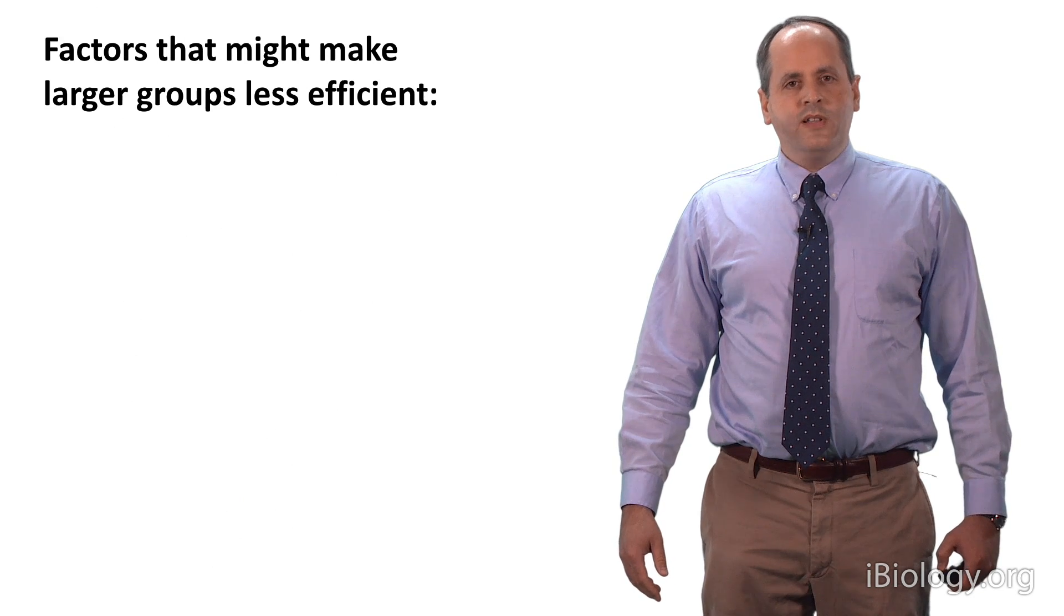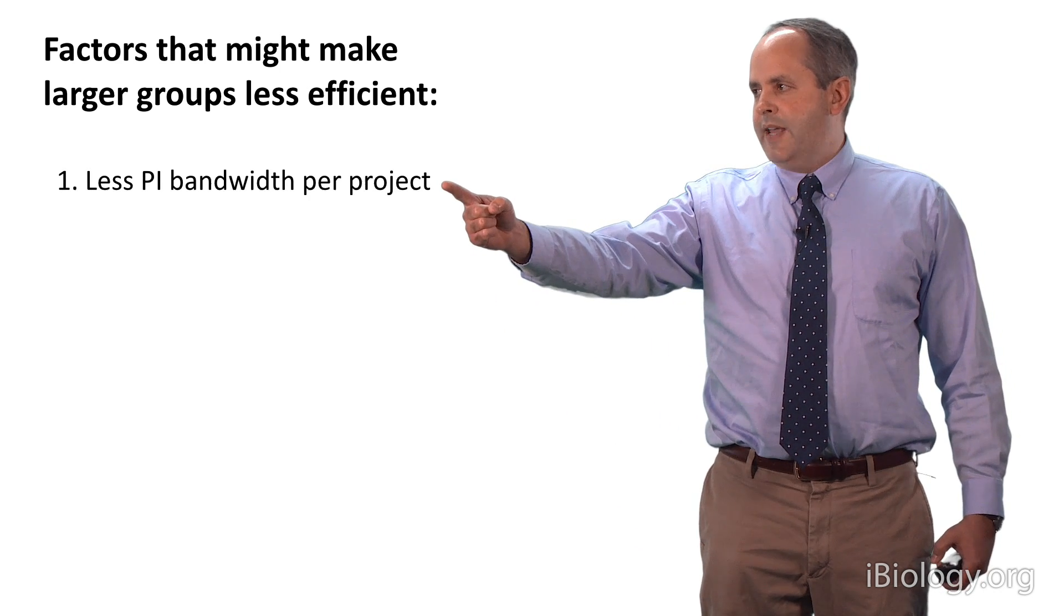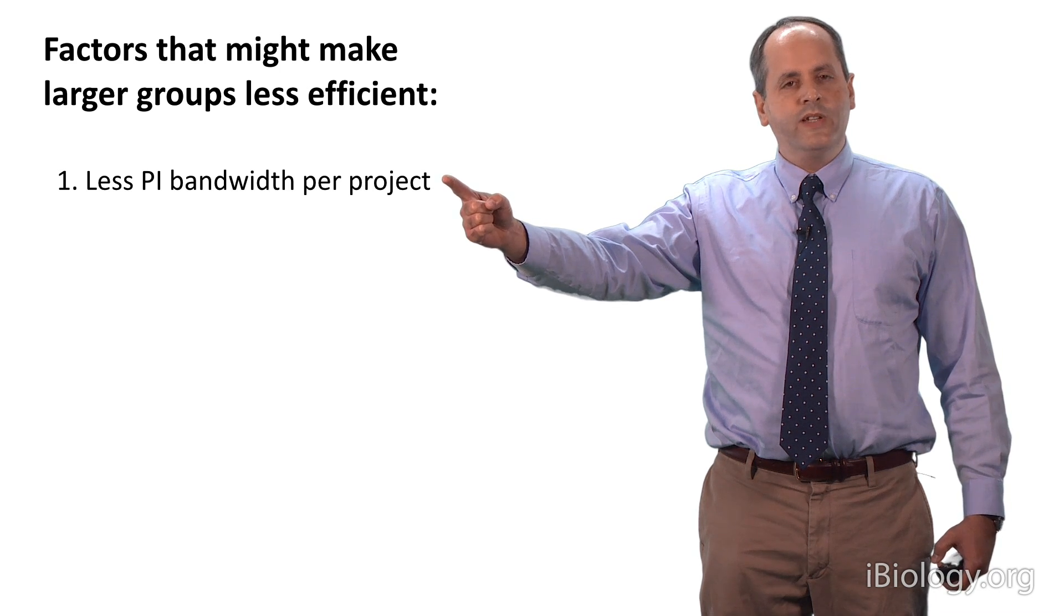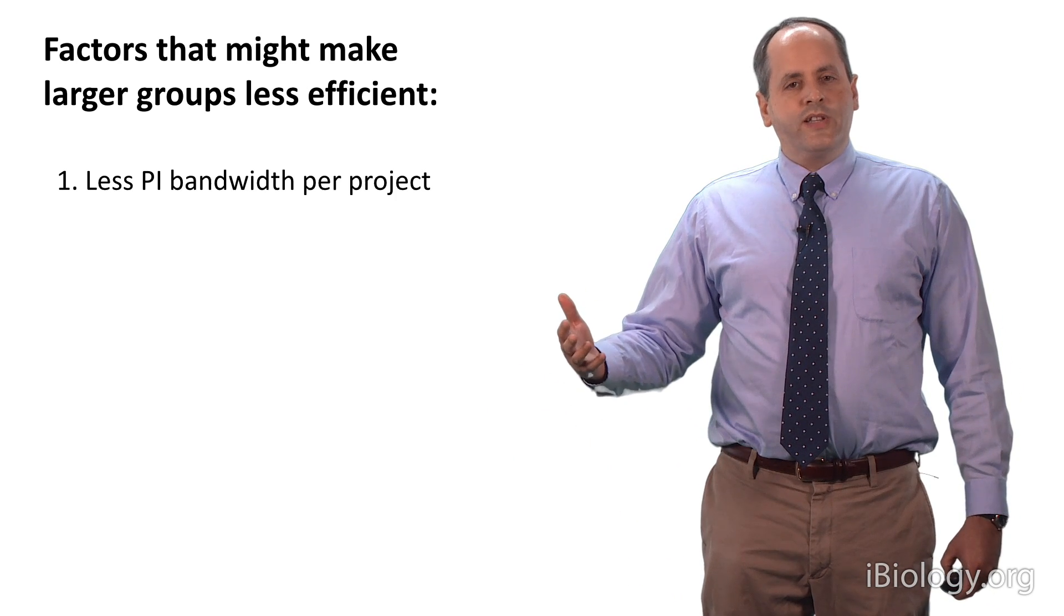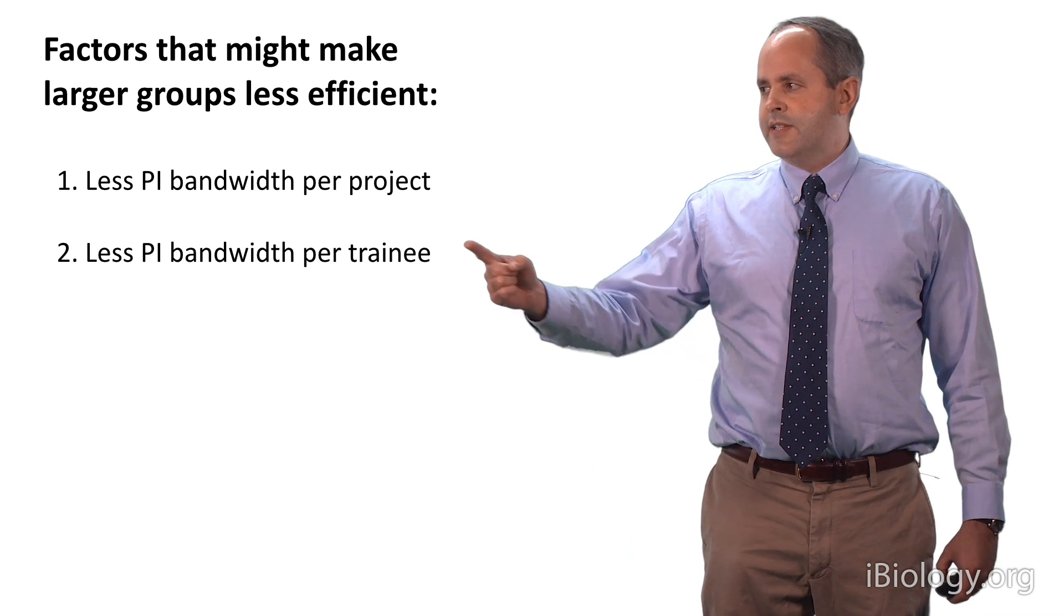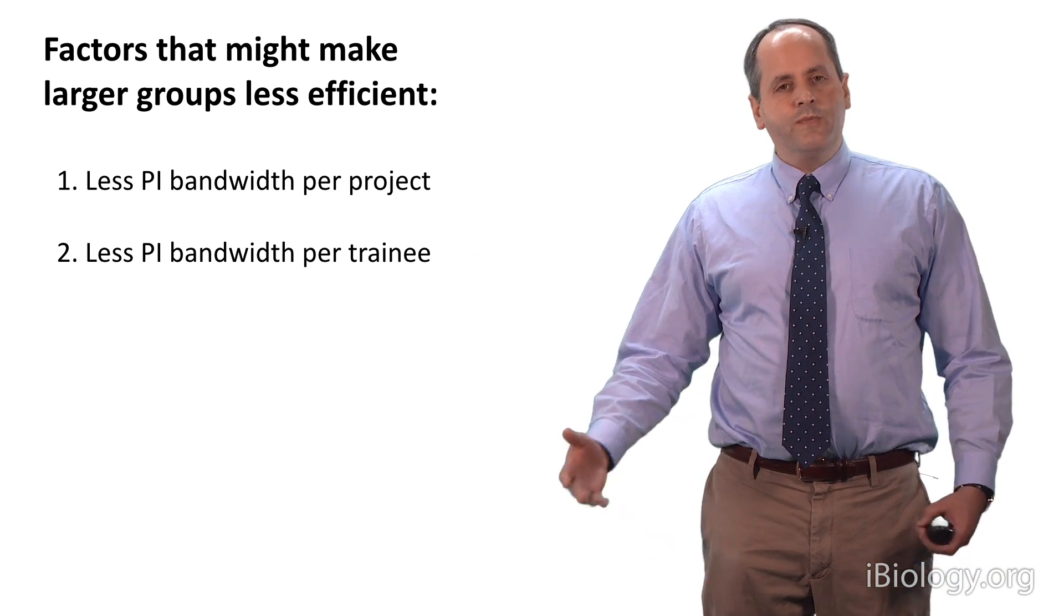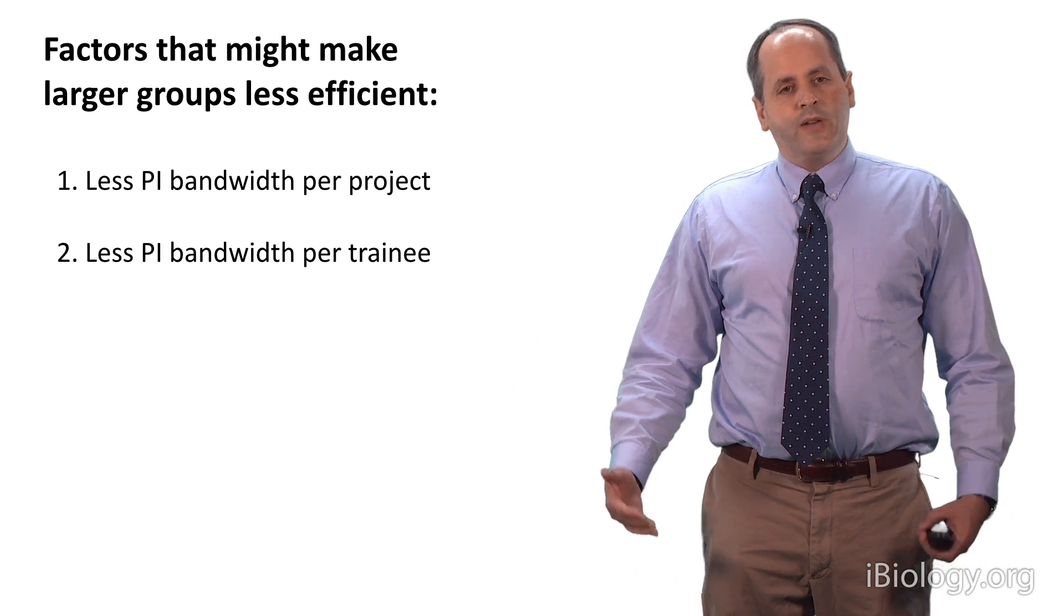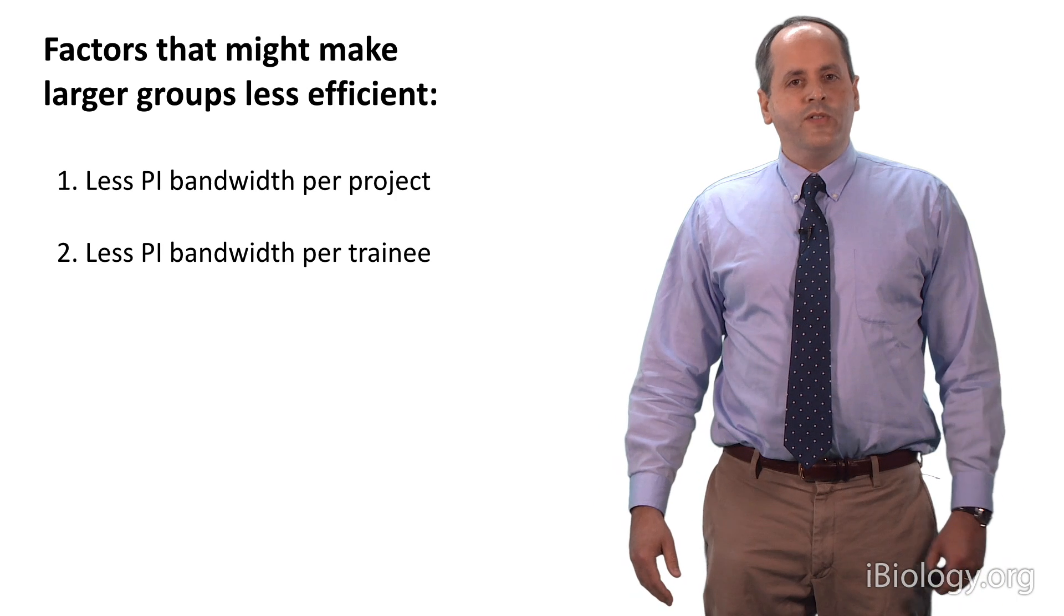For example, as a research group gets larger, it may become less efficient because less of the PI's bandwidth, their time, their ability to think about things, is available per research project. You might think that as their bandwidth becomes more and more subdivided, that would eventually be to the detriment of the research going on in the lab. Similar to this, as a lab gets bigger, the PI will have less and less bandwidth to devote per trainee, per graduate student, postdoc, etc. And again, you would think that as this gets over a certain point and their bandwidth is subdivided too much, the training in the lab will suffer, and thus the research will also suffer.